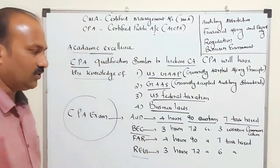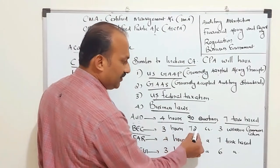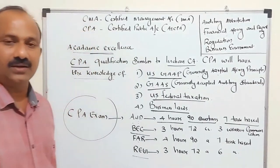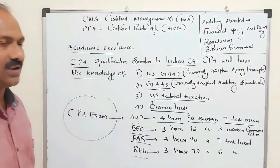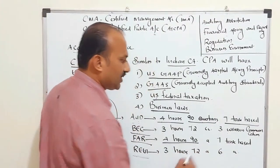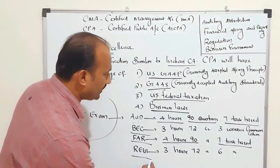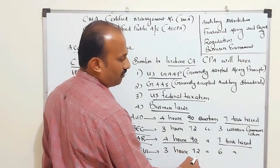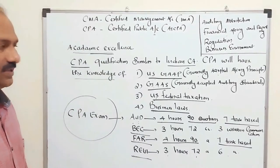BEC is Business Environment Concepts — 3 hours total, 72 multiple-choice questions, and 3 written communication tasks. FAR (Financial Accounting and Reporting) — 4 hours, 90 questions, and 7 task-based questions. REG (Regulation) — 3 hours, 72 multiple-choice questions, and 6 task-based questions.